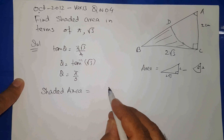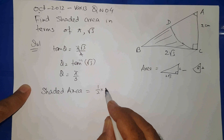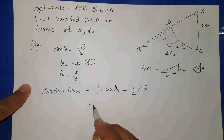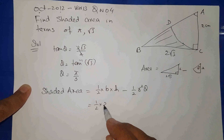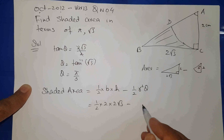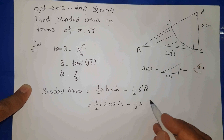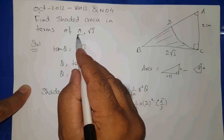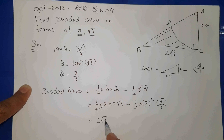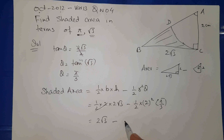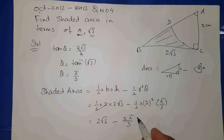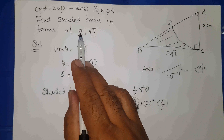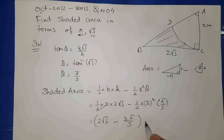Shaded area = area of triangle − sector area = (1/2) × base × height − (1/2) r² θ. Base = 2, height = 2√3, radius = 2, θ = π/3. Since the answer is required in terms of π and √3, we do not convert to a decimal. This gives the answer in the required form with units of cm².